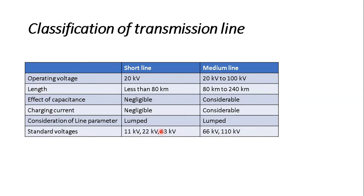A medium transmission line has a length between 80 km to 240 km and a line voltage between 20 kV to 100 kV. Due to the appreciable length and somewhat higher voltage, there is considerable effect of charging current and shunt capacitance that cannot be neglected. Although the capacitance is distributed uniformly over the entire conductor length, it is still treated as a lumped parameter. Standard voltages for medium transmission lines are 66 kV and 110 kV.